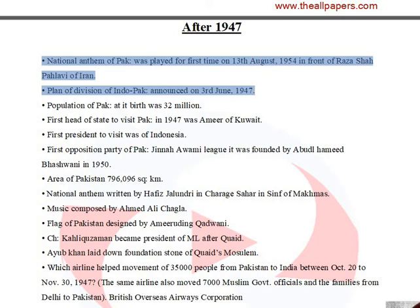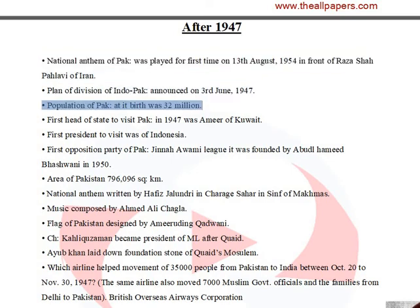The plan for the Division of Indo-Pakistan was announced on June 3, 1947. The population of Pakistan at its birth was 32 million.